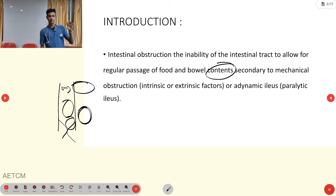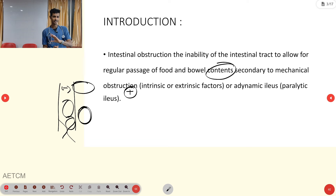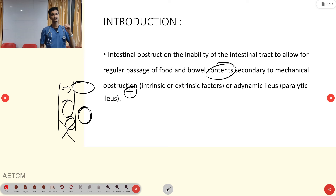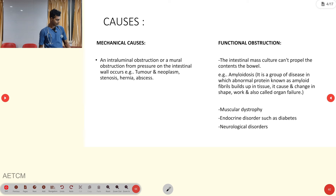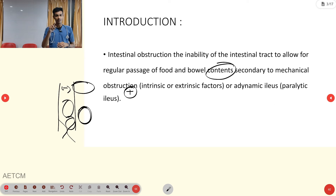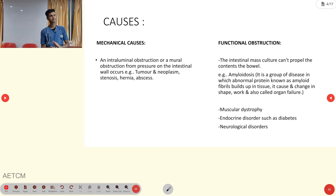In mechanical obstruction, peristalsis is present but blocked by foreign bodies or structural causes. The second major type is adynamic ileus: from the esophagus to the colon we have peristaltic movement, and if peristalsis is absent, that condition is called paralytic ileus or adynamic ileus. In mechanical obstruction peristaltic movement is present; in adynamic ileus it is absent — this is the key difference.